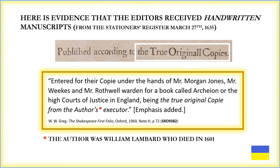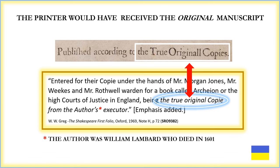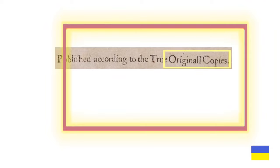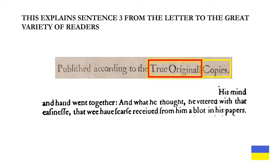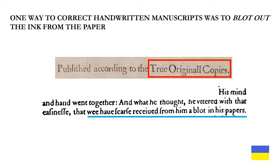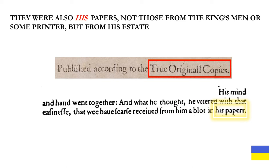The printer would have received the original manuscript using the same phrase as in the First Folio. What the editors got for the First Folio were therefore scriveners' copies based on the true originals — the handwritten manuscripts. This explains the line from the letter to the great variety of readers: 'His mind and hand went together, and what he thought he uttered with that easiness that we have scarce received from him a blot in his papers.' One way to correct handwritten manuscripts was to blot out ink. They were also his papers — not those from the King's Men or some printer, but from his estate.